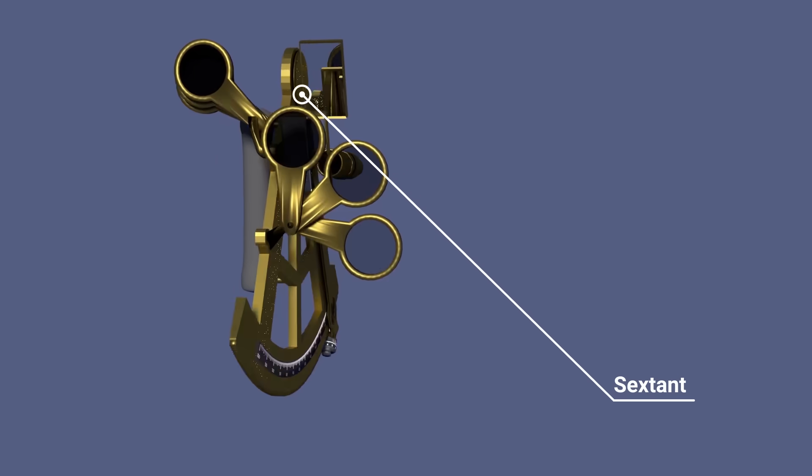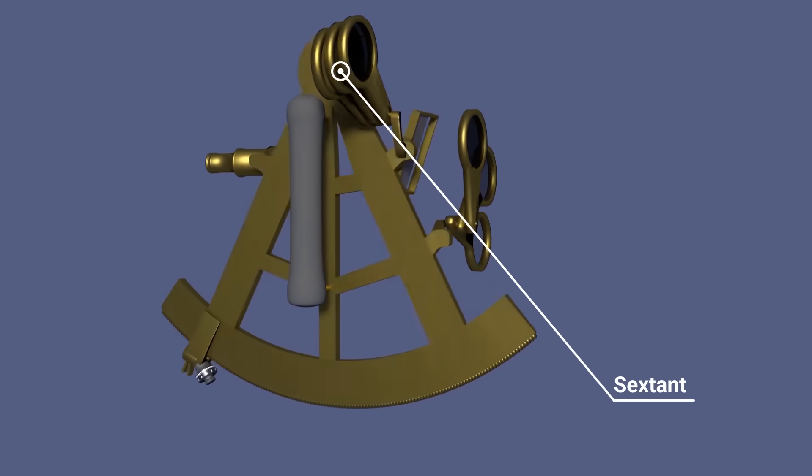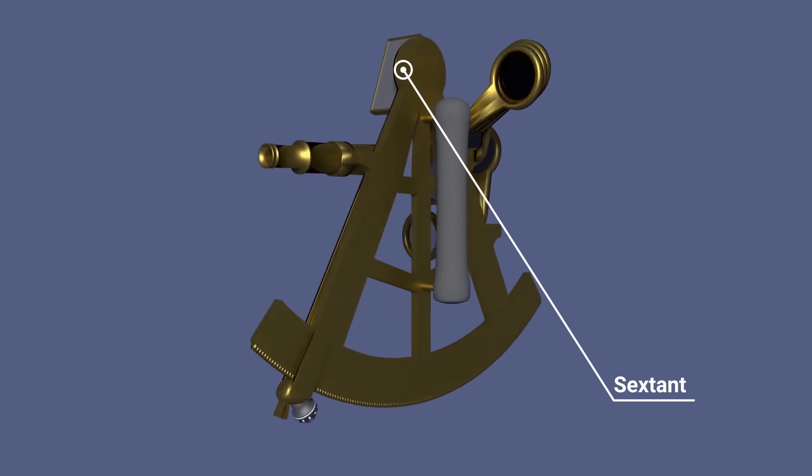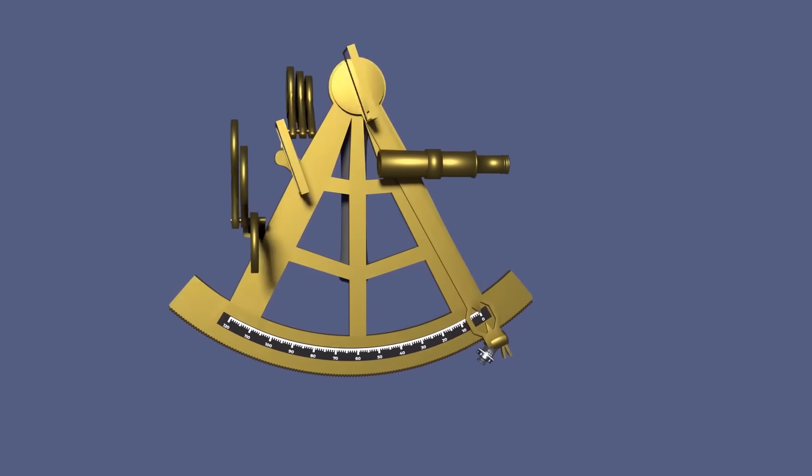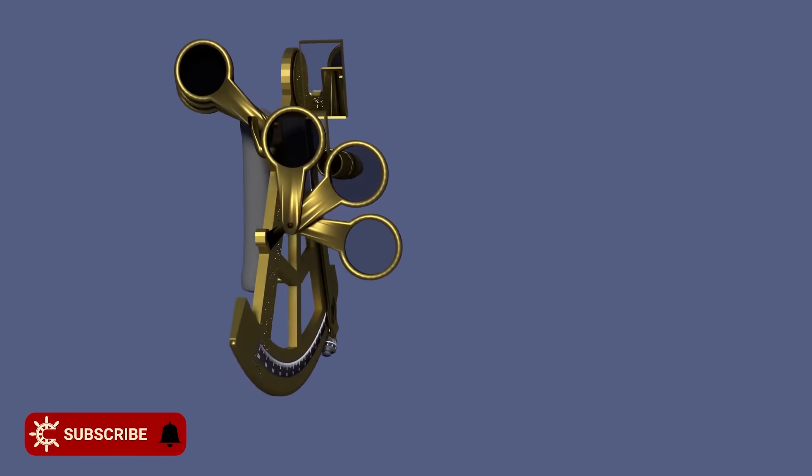The sextant. Probably one of the most recognizable pieces of navigational equipment. Safe to say, you can't honestly call yourself a navigator until you've mastered it. Luckily, it's a lot simpler than it looks, so we'll take a look at it together.